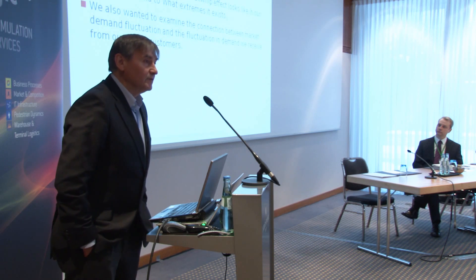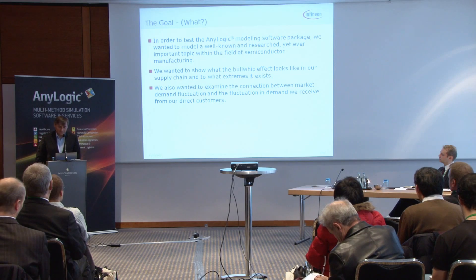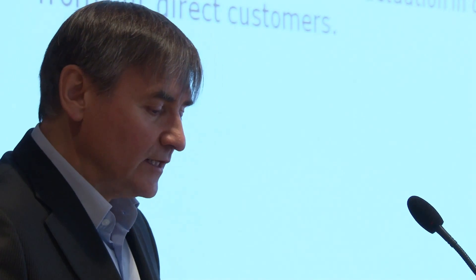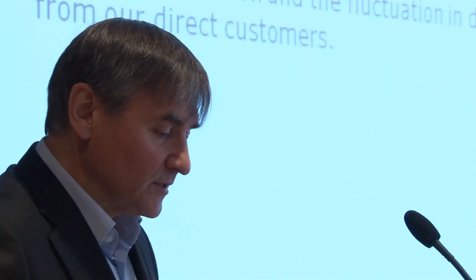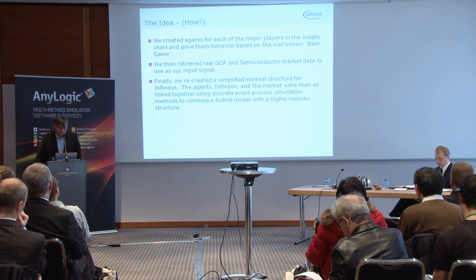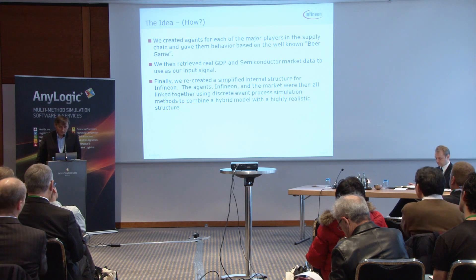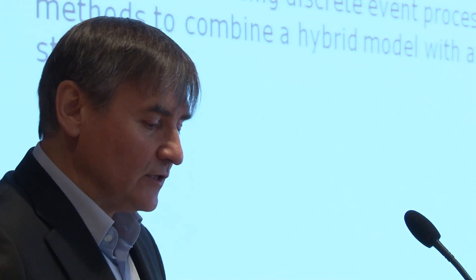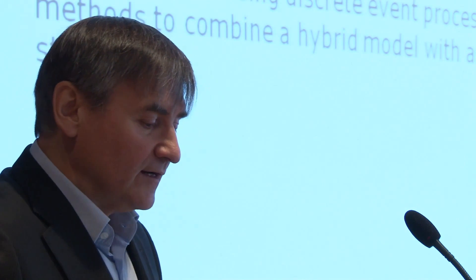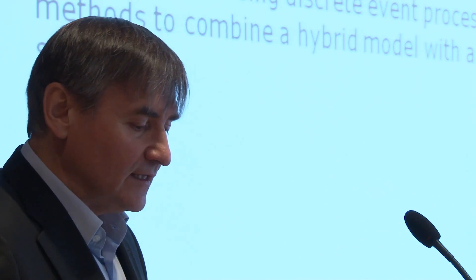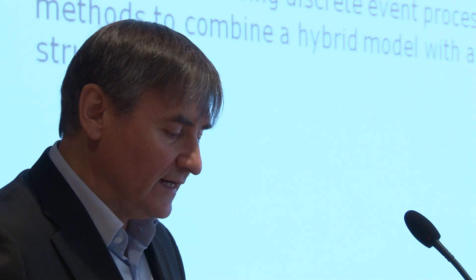We wanted to use the AnyLogic modeling software package to test this. We wanted to model a well-known and researched yet ever-important topic within semiconductor manufacturing — to show what the bullwhip effect looks like in our supply chain and to what extremes it exists. We also wanted to examine the connection between market demand fluctuation and the fluctuation in demand we receive from our customers. We created agents for each of the major players in the supply chain and gave them behavior based on the well-known beer game. We retrieved real gross domestic product and semiconductor market data as our input signal, and created a simplified internal structure for Infineon — linking Infineon and the market together using discrete event process simulation methods to combine a hybrid model.